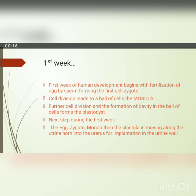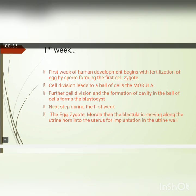The next event is cleavage. Cleavage is a number of mitotic divisions through which a zygote passes, increasing the cell numbers. This is how a zygote passes from the two-cell stage to the end cell stage, which is the morula. After the morula, the blastocyst stage is achieved.